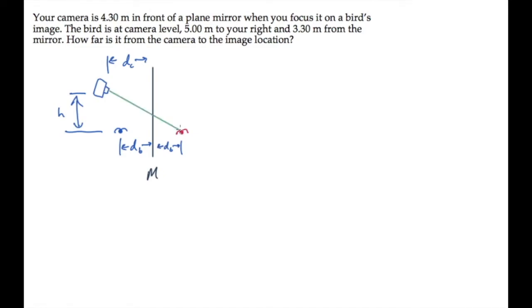And we're looking for this distance, the distance d. We'll find it by applying the Pythagorean theorem to this right triangle. The vertical leg has a length of h, and this horizontal leg has a length of d sub c plus d sub b, the distance from the camera to the mirror plus the distance from the mirror to the bird's image.